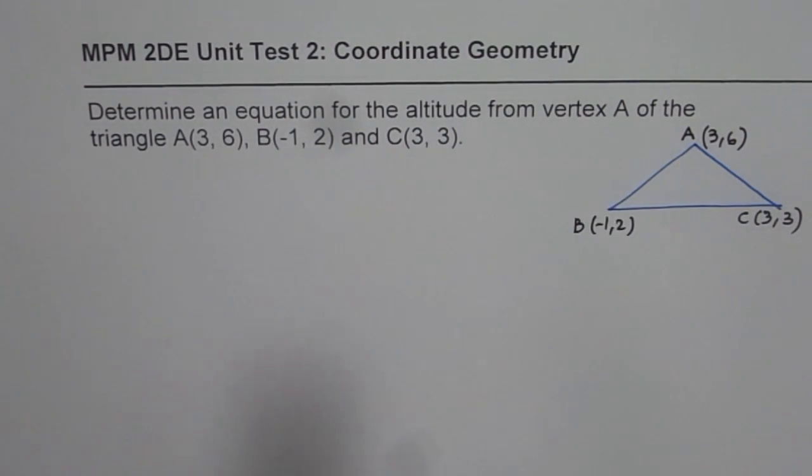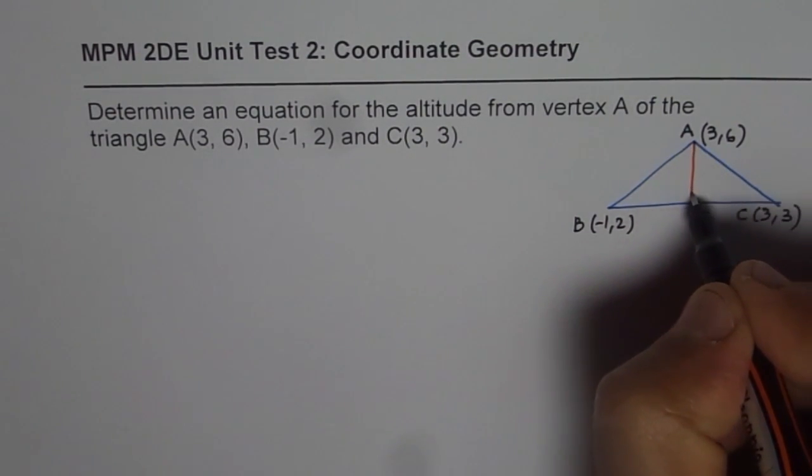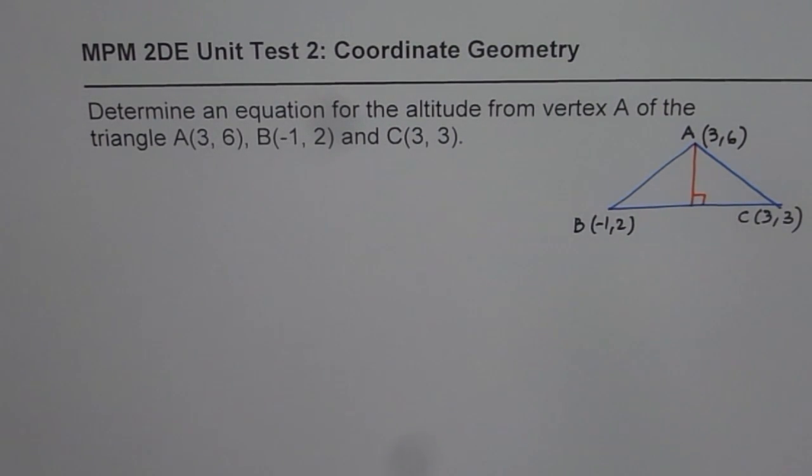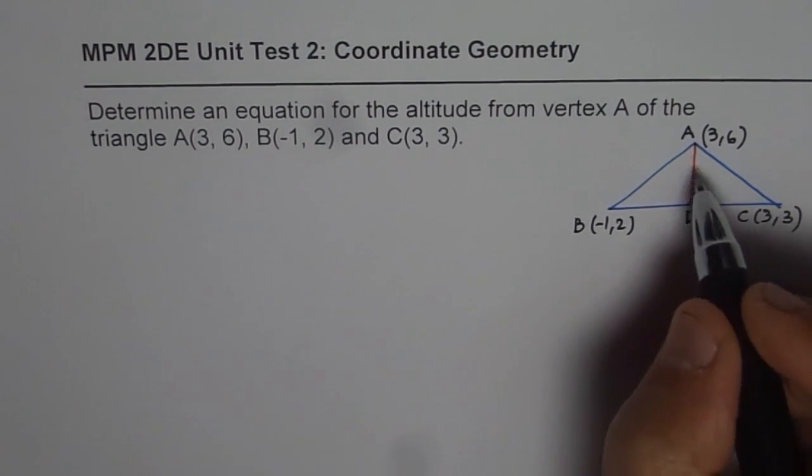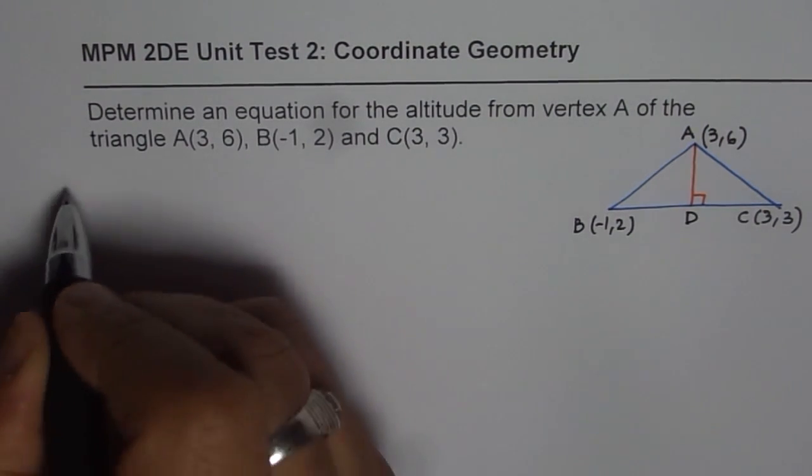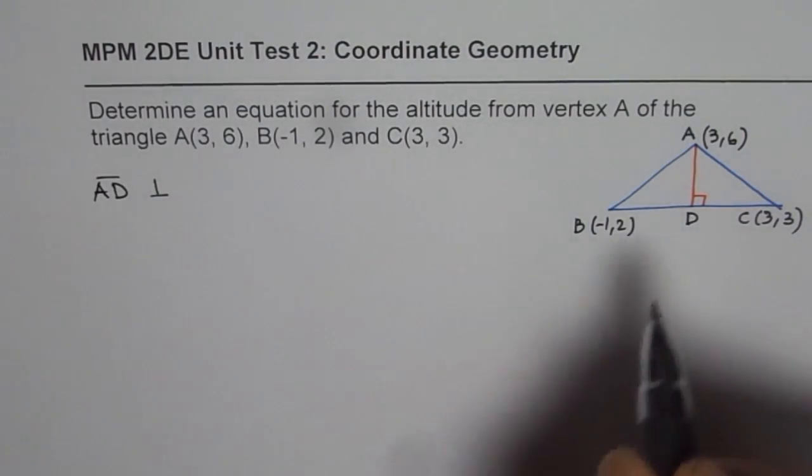We need to find equation of the altitude from vertex A. Now altitude really means that you have to drop a perpendicular from the vertex. If you drop a perpendicular from the vertex, it will be at right angles to the opposite side. So let this point be D. So AD is the altitude for us. Now AD is also perpendicular to